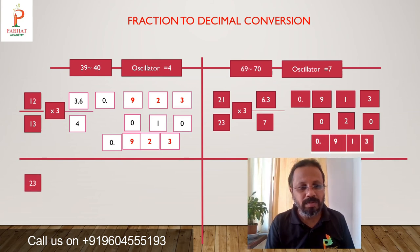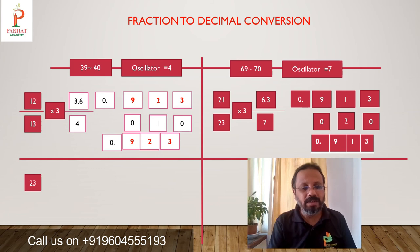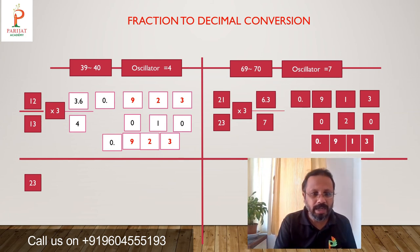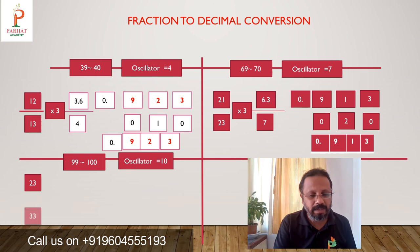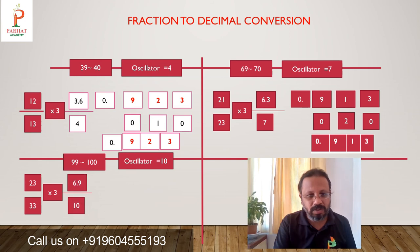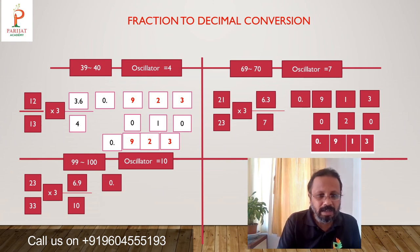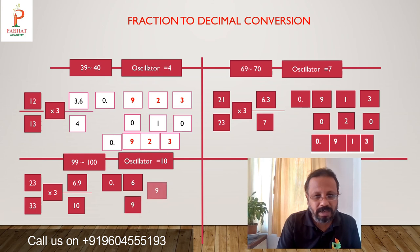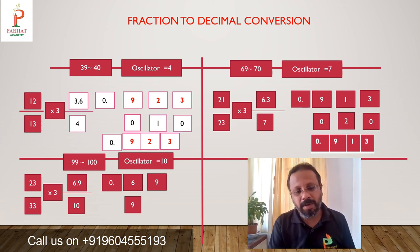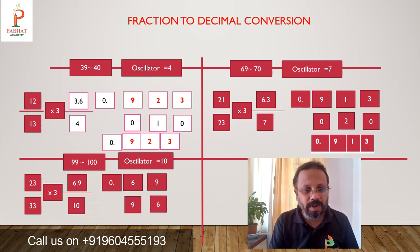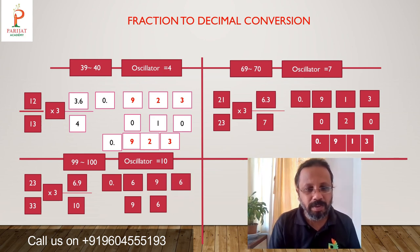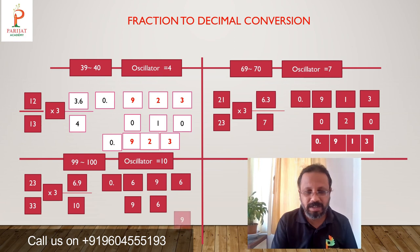Now: 23 upon 33. Since 33 threes are 99, the osculator is 10. The required fraction is 6.9 upon 10. 10 sixes are 60, remainder is 9. Gross dividend is 96. 10 nines are 90, remainder is 6. Gross dividend is 69. 10 sixes are 60, remainder is 9 again. So the answer is 0.969696..., a recurring decimal: 0.969696 repeating.